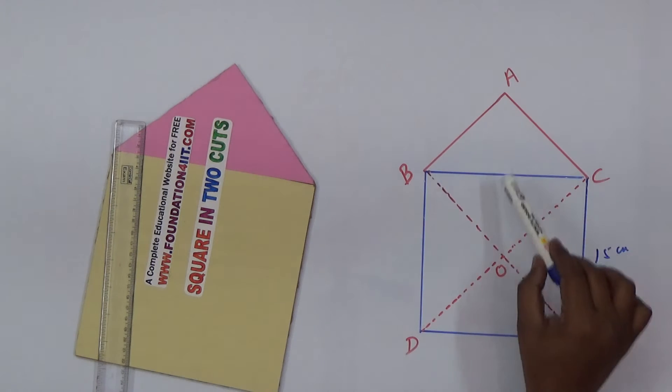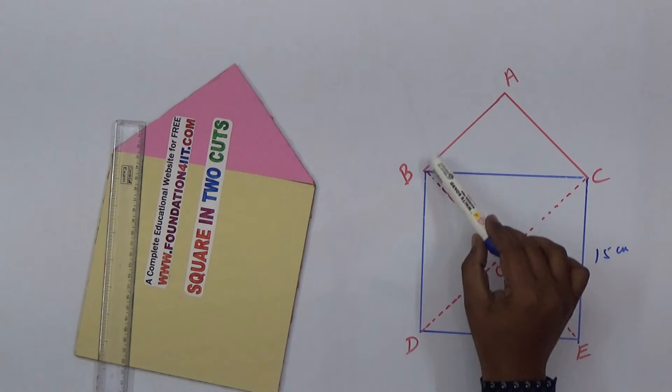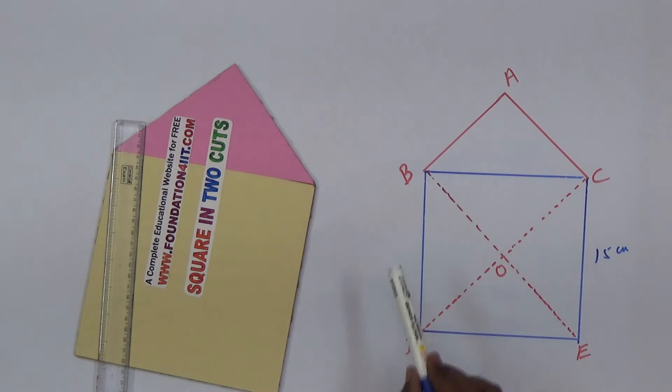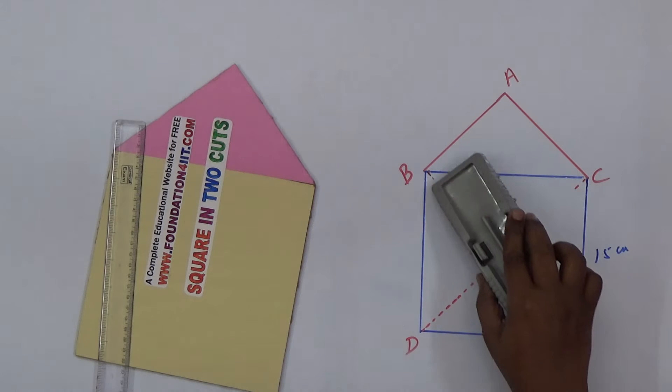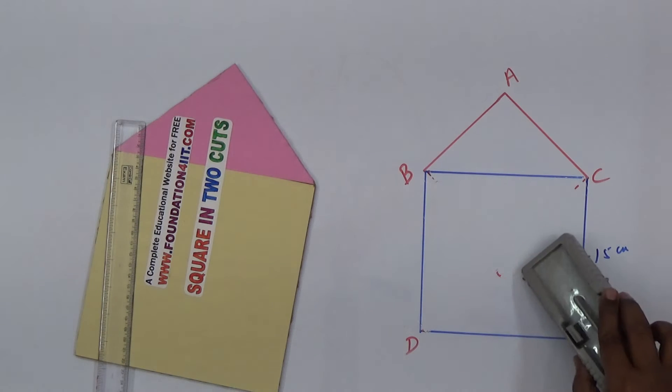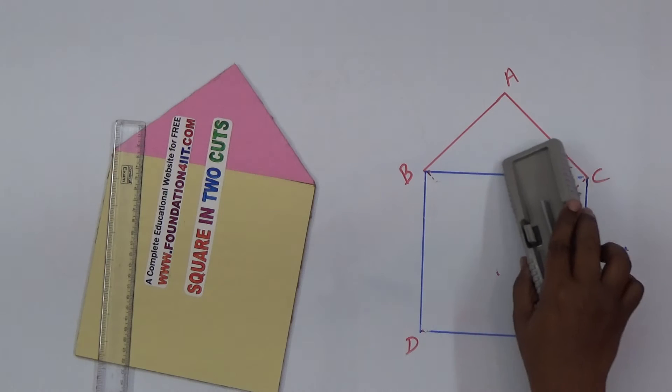This is 15 centimeters and the area of triangle BOC is the same as BAC because these two are equivalent area. The area of this triangle is one-fourth of this square. With only two straight line cuts we can do this.